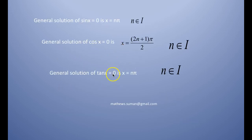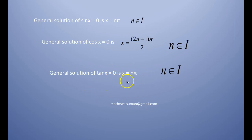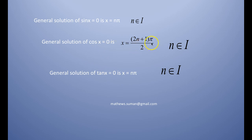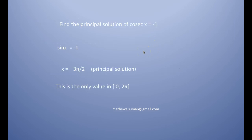Similarly, the general solution of tan x = 0 is x = nπ, because on the horizontal axis at 0, π, 2π, 3π, tan is 0. The general solution of cos x = 0 is x = (2n + 1)π/2, where n belongs to the set of integers.